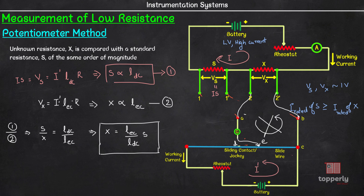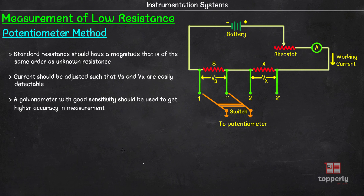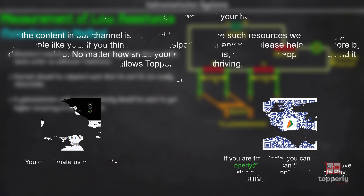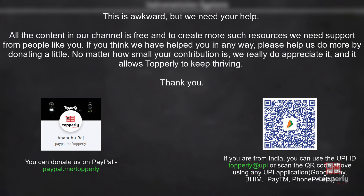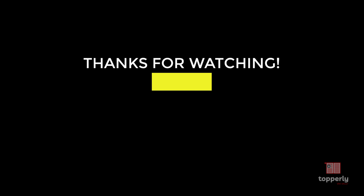The important points to remember are: first, the magnitude of the standard resistance should be of the same order as the unknown resistance. Second, the current should be adjusted such that V_s and V_x have magnitudes that are easily detectable. Finally, the accuracy of the measurement depends on the sensitivity of the galvanometer, so to get higher accuracy we need a galvanometer with good sensitivity. That's all for this lecture. Feel free to ask doubts in the comments, like the video if you found it useful, and subscribe to the channel. In the next video we will discuss the Kelvin double bridge method for measurement of low resistance.